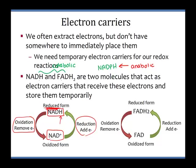FAD and FADH2 is our other major electron carrier and follows a similar pattern. FAD is the oxidized form; FADH2 is the reduced form. During reduction, you add electrons; during oxidation, you take away electrons. NADH is used way more often than FADH2. NADH can accept very high energy electrons from high-energy bonds. FADH2 doesn't really accept very high energy electrons, so our cells really prefer NADH, but we still keep FADH2 around for occasional uses.